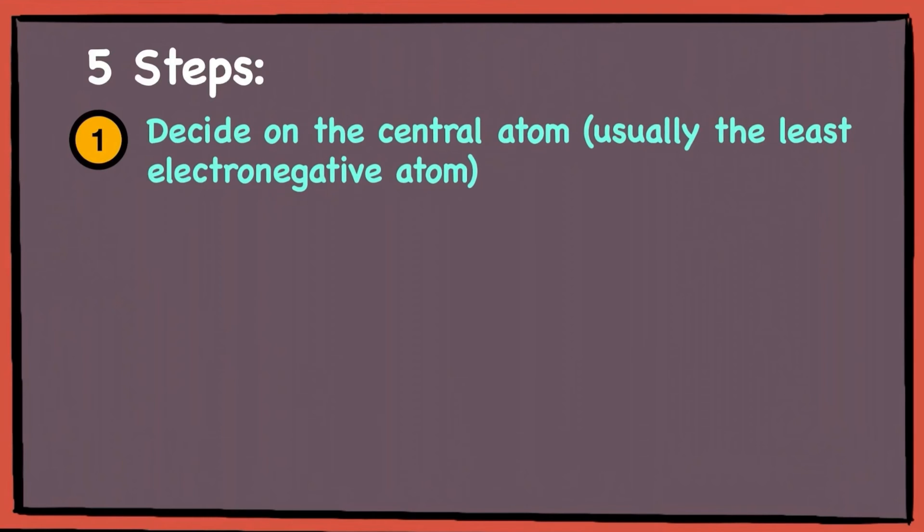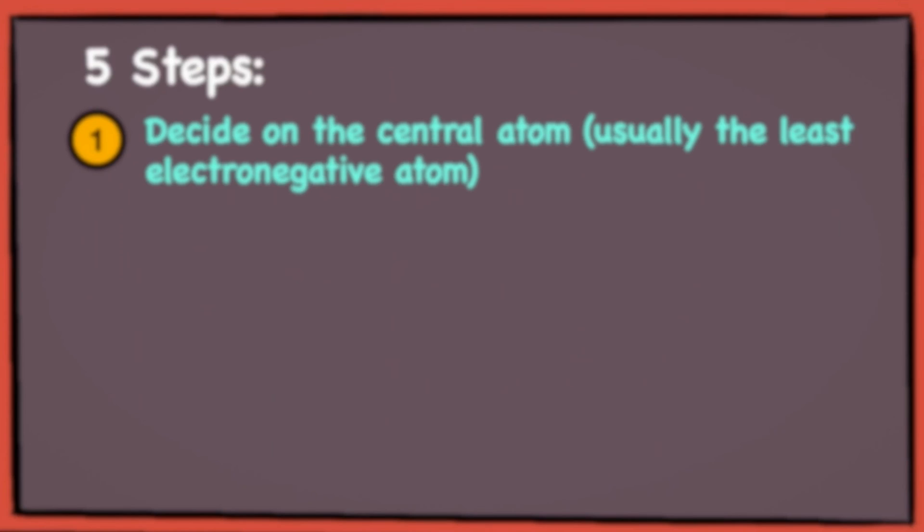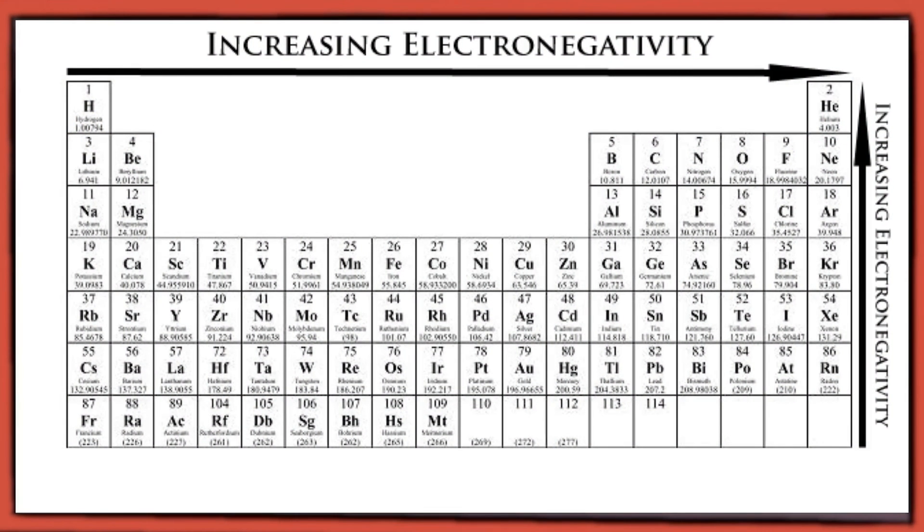I've summarized five steps on how to draw the dot-and-cross diagrams for polyatomic ions. Firstly, decide on the central atom. The central atom is usually the least electronegative atom. Electronegativity increases across the period and decreases down the group, with fluorine being the most electronegative atom, followed by oxygen and then nitrogen.